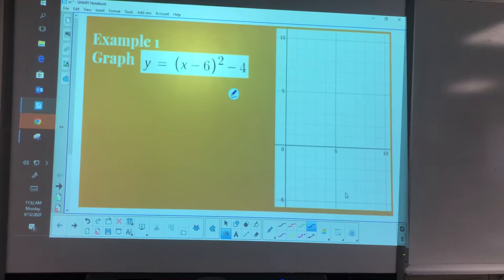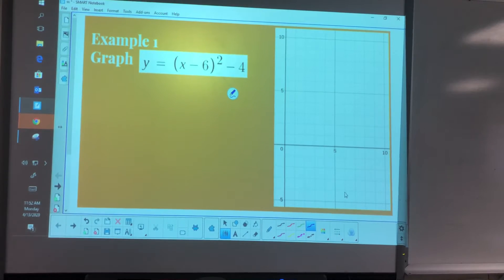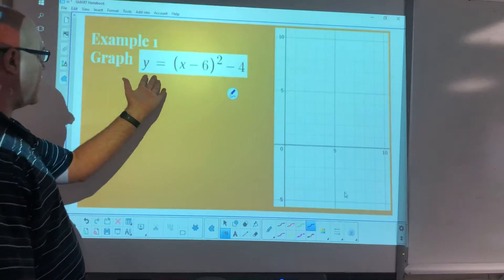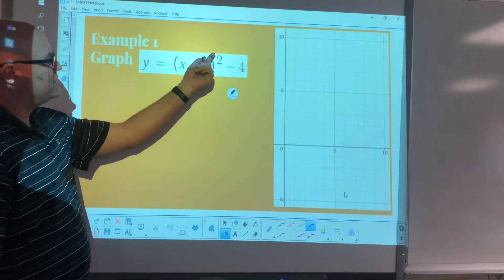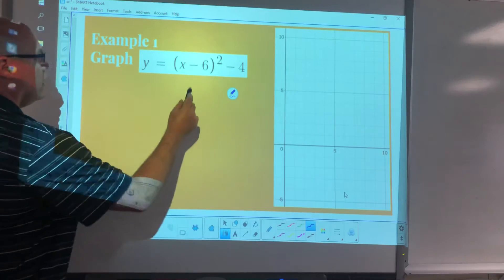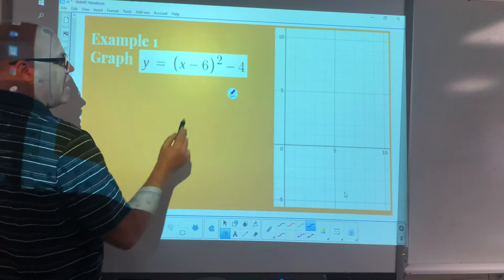Alright, here's our first example graphing the parabola when we're given the quadratic function in vertex form. If y equals 1 times x minus 6 squared minus 4, well we know that h is 6 and k is negative 4.